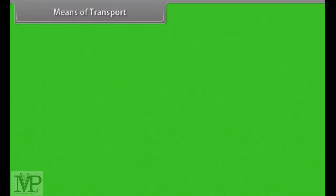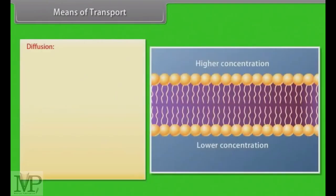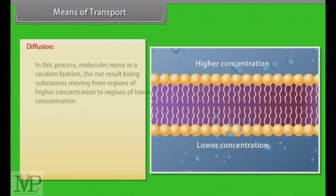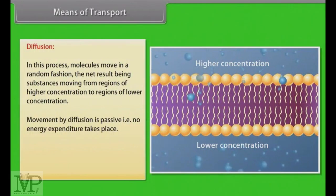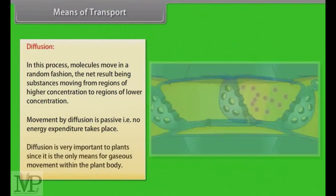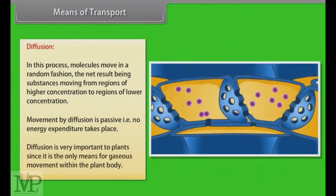Means of transport. Let us start with diffusion process. Diffusion is a slow process and is not dependent on a living system. In diffusion, molecules move in a random fashion, the net result being substances moving from regions of higher concentration to regions of lower concentration. Movement by diffusion is passive and may be from one part of the cell to the other, or from cell to cell, or over short distances. No energy expenditure takes place. Diffusion is very important to plants since it is the only means for gaseous movement within the plant body.